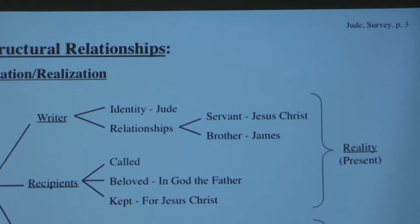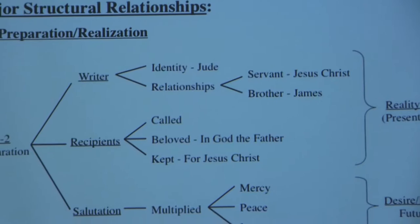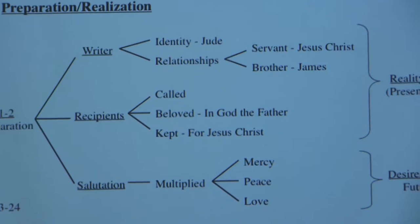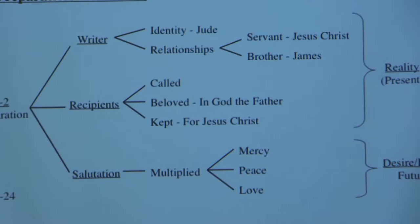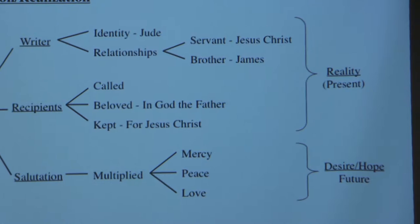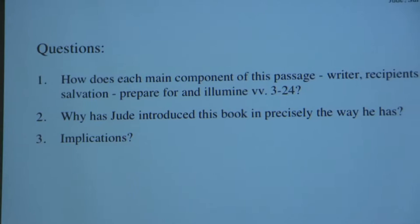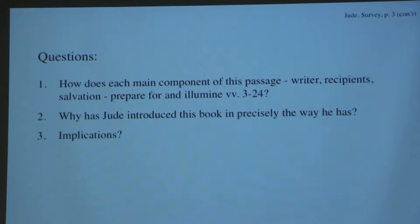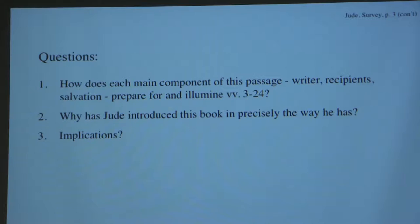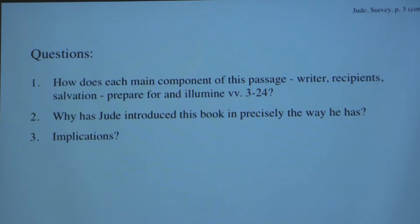Third, the salutation proper: 'may mercy, peace, and love be multiplied to you.' We want to raise questions with regard to how each main component — what he says about the writer, the recipients, and salvation — prepares for and illumines verses 3 through 24, the rest of the book. Why has Jude introduced this book in precisely the way he has, and what are the theological implications of the answers to the definitive and rational questions?